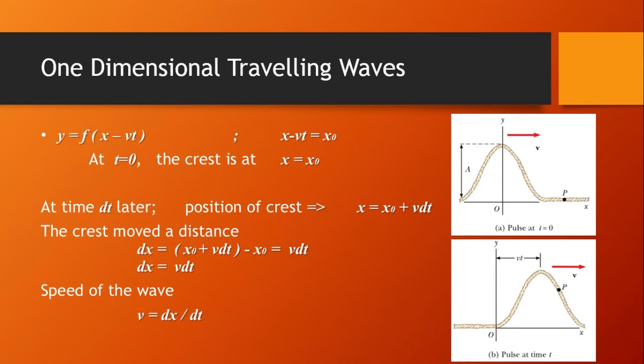After some time, when time changes by dt, the crest moves and its position will be x equals x₀ plus v·dt. So the crest has moved a distance dx in this time change. The change in distance is dx equals (x₀ plus v·dt) minus x₀. Here, x₀ plus v·dt is the current position of the crest, and minus x₀ is the old position. Solving this equation, the change in distance equals speed times change in time, so the wave speed is v equals dx/dt.